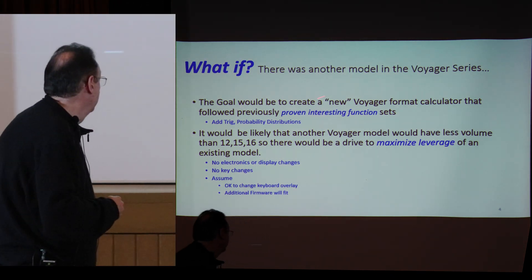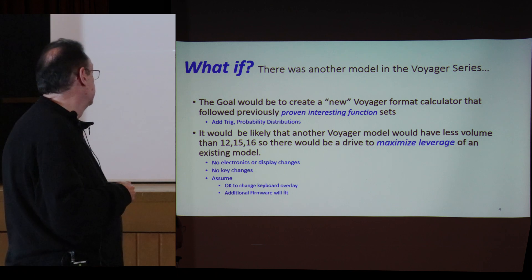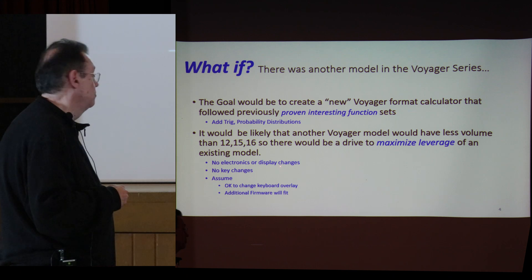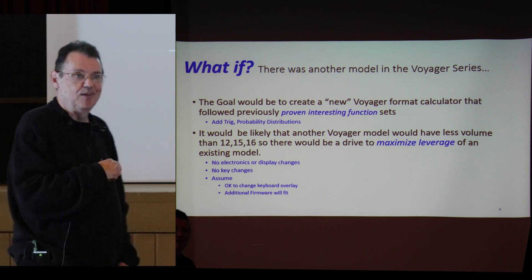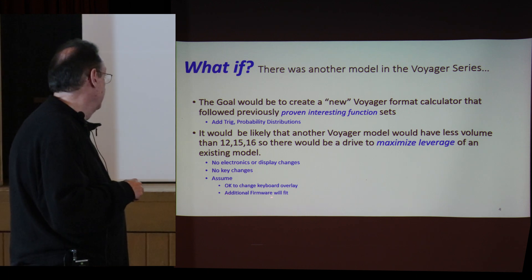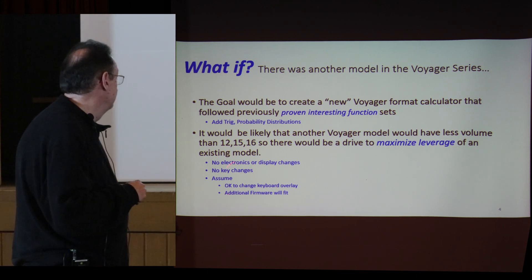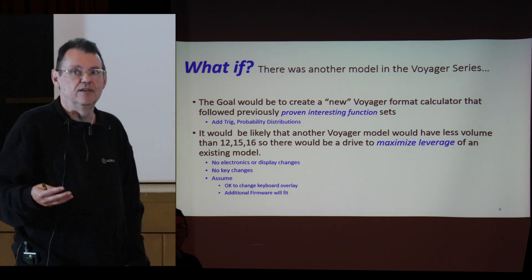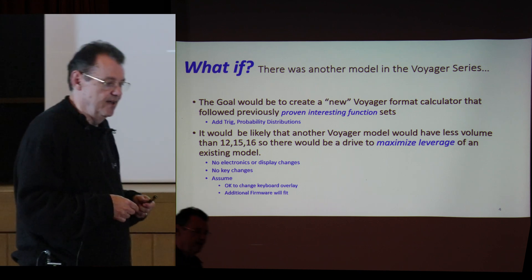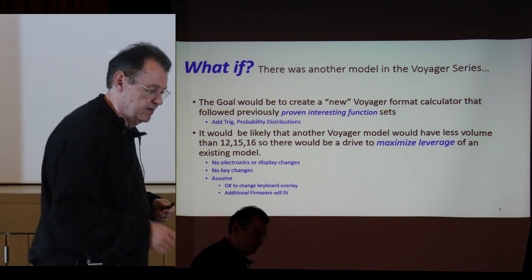So there's a lot of precedent for putting trig on a business calculator to make a business plus technical. Proven interesting function set, there's lots of precedents that say add trig and probability distributions. Maximize leverage, what would that mean? The goal would be no electronics or display changes, no key changes, key label changes. You assume it's okay to change the keyboard overlay and additional firmware that will fit. One of the advantages of no key changes is you avoid the whole conflict of arguing about which should be there.